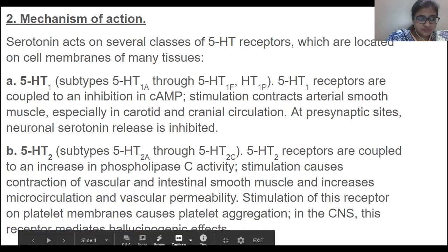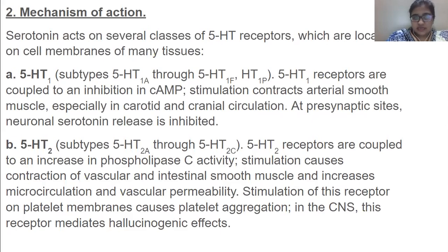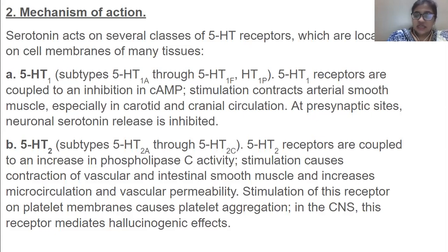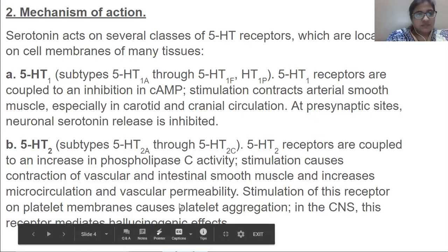5-HT2 receptors have subtypes A through C and are coupled to an increase in phospholipase C activity. Stimulation causes contraction of vascular and intestinal smooth muscle and increases microcirculation and vascular permeability. Stimulation of this receptor on platelet membranes causes platelet aggregation. In the CNS, this receptor mediates hallucinogenic effects — hallucination being a feeling of the presence of somebody who is not actually there.